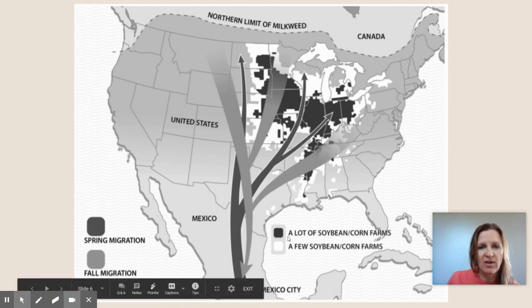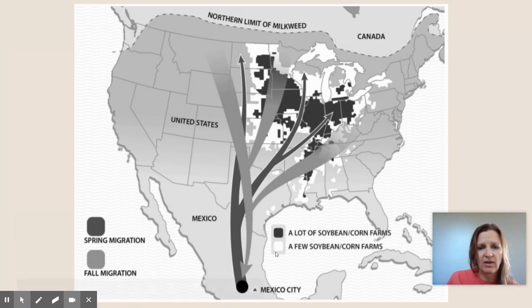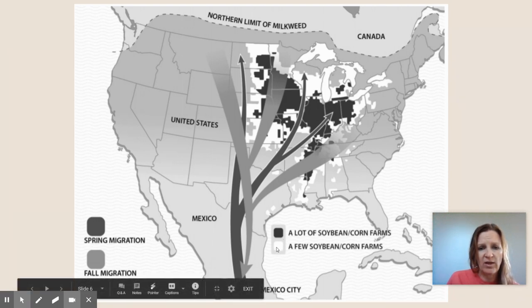Anytime we see black, it's showing that there are lots of soybean and corn farms, and the white area indicates very few soybean and corn farms.